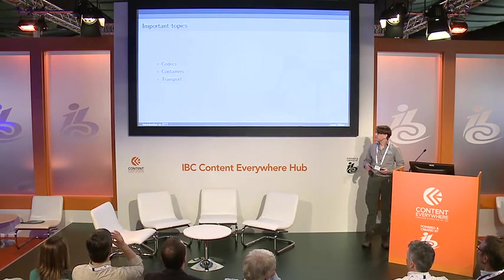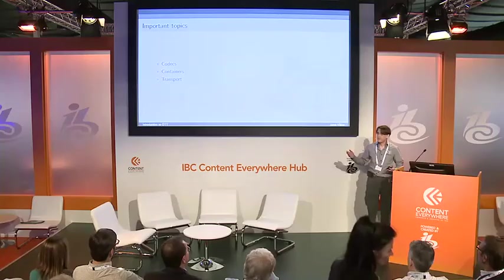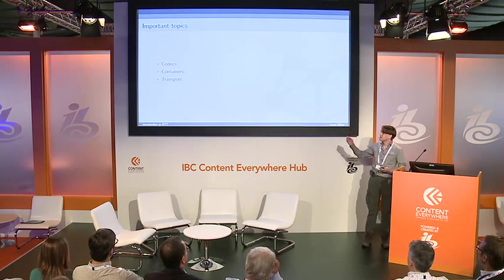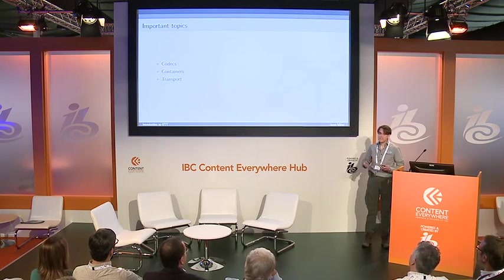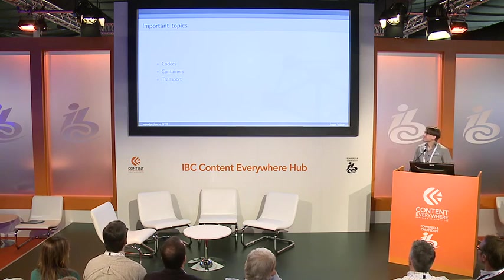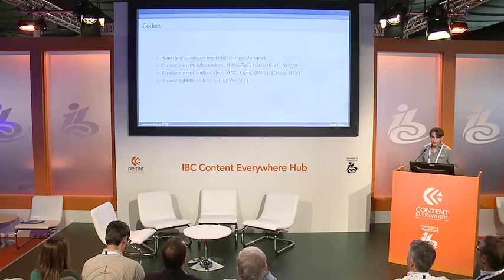Some of the important topics when talking about this are codecs, containers, and transport. I'll quickly explain what all of them are and then go deeper into each, which will basically be the entire presentation. A codec is a way to encode video or audio data — a way to make it take less space for sending over the internet, because raw data is just not doable. Containers are methods to store that encoded data into something that can be sent over the internet. And transport is the method by which you send it over the internet.